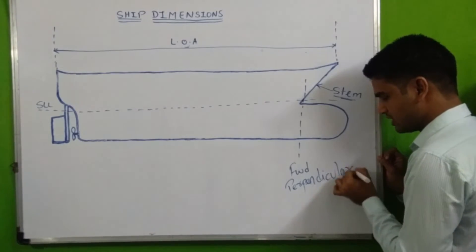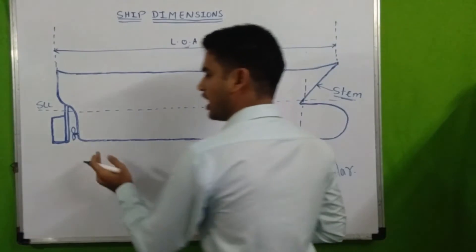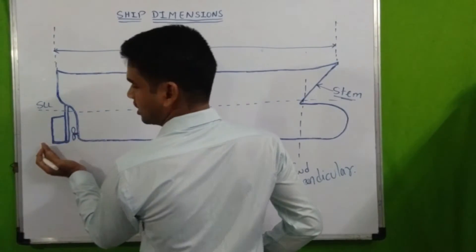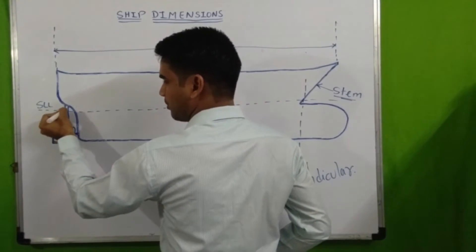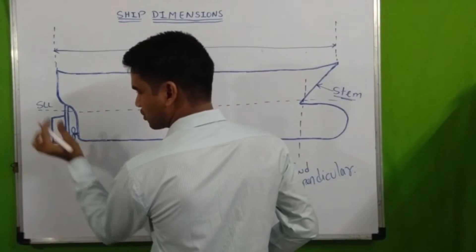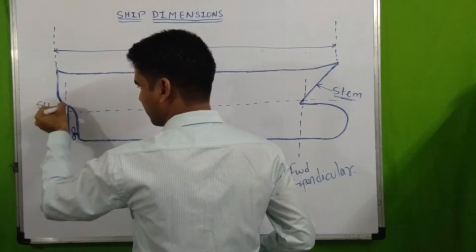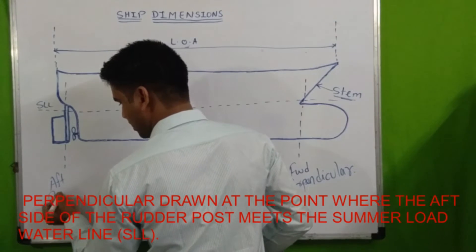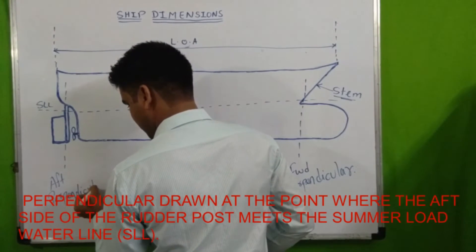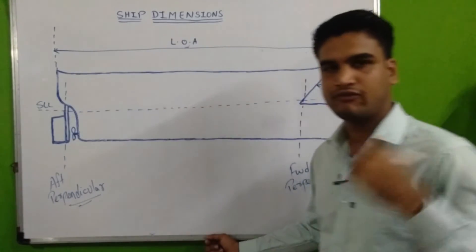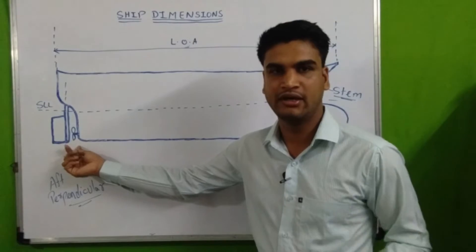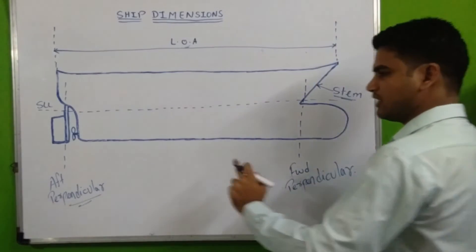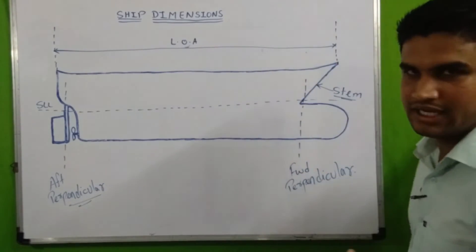This is known as forward perpendicular. Similarly, we have aft perpendicular, which is a perpendicular drawn at the point where the aft side of the rudder post meets the summer load line. This is known as aft perpendicular. One more thing: if a rudder post is not fitted, then we will take the center line of the rudder stock as the aft perpendicular. The distance between these two is known as length between perpendiculars.